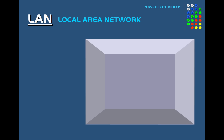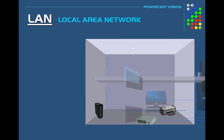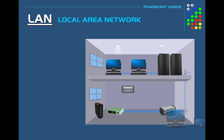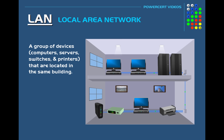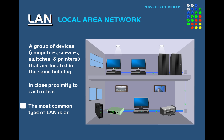The next type of network is a LAN. LAN stands for Local Area Network. A Local Area Network is a group of devices such as computers, servers, switches, and printers which are located in the same building, such as in an office or in a home — in other words, in close proximity to each other. The most common type of LAN is an Ethernet LAN where two or more computers are connected to Ethernet cables using a switch.